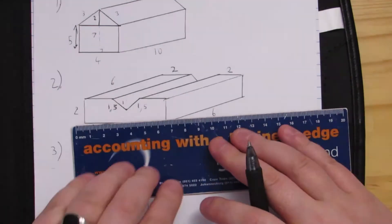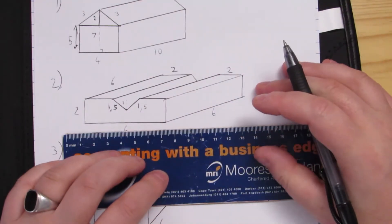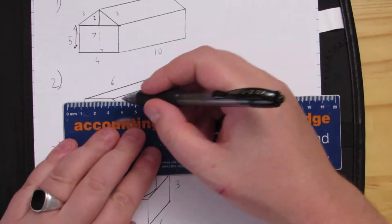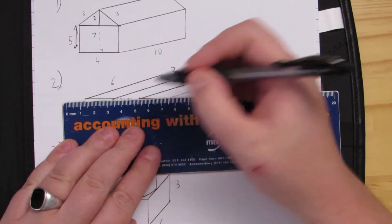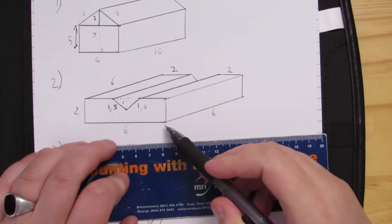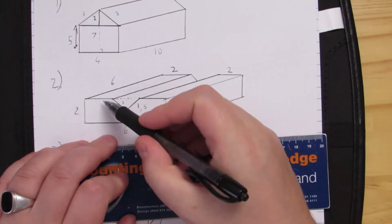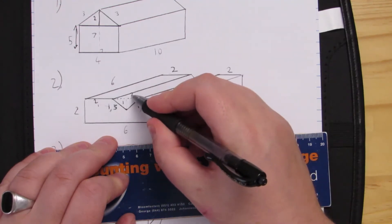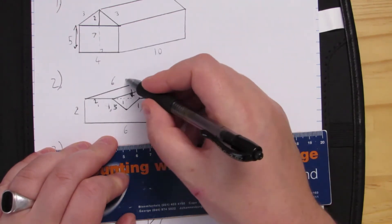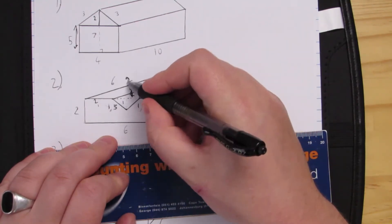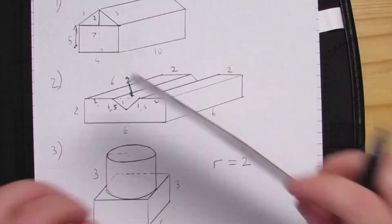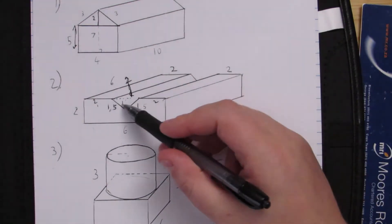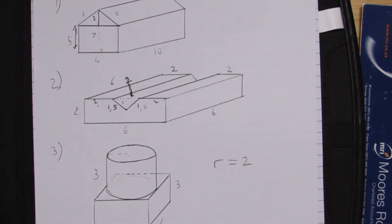Moving on to question two. We have a block with a slot cut in it. This is the base of the triangle that's been cut out. If this entire length is six, and two on each side, we can assume the cutout base is also two — meaning that dimension there should be two as well, making it a little bit easier.